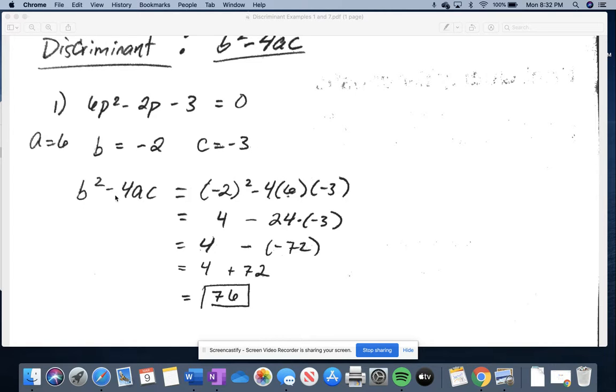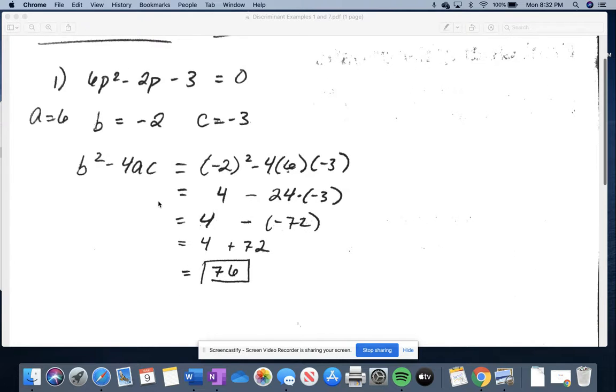So then b squared minus 4ac, we're just going to substitute a, b, and c into this. So b squared is negative 2 squared minus 4 times a, which is 6, times c, which is negative 3.